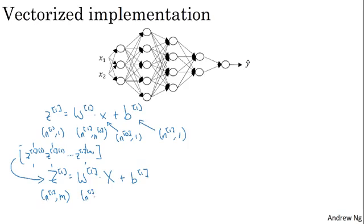The dimensions of w1 stays the same, so it's still n1 by n0. And x, instead of being n0 by 1, is now all your training examples stacked horizontally. So it's now n0 by m. And so you notice that when you take an n1 by n0 matrix and multiply that by an n0 by m matrix, they together give you an n1 by m dimensional matrix, as expected.